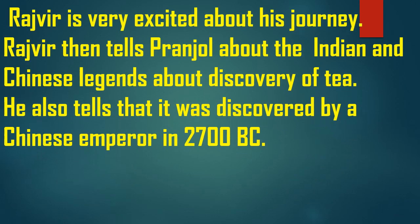Rajveer is very excited about his journey because he was going there for the first time. Rajveer tells Pranjal about Indian and Chinese legends about the discovery of tea. The Chinese legend was about a Chinese emperor, and the Indian legend is about Bodhidharma. He also tells that tea was discovered by a Chinese emperor in 2700 BC. This is all about the introduction of this chapter.